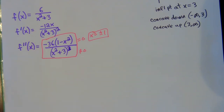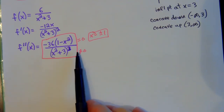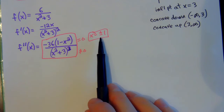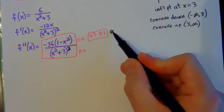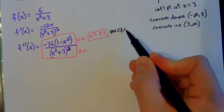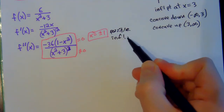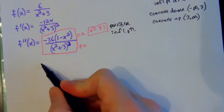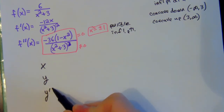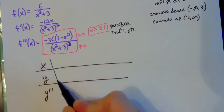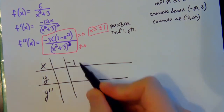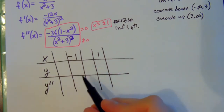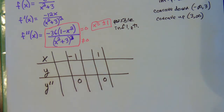Once you have the second derivative, set the numerator and denominator equal to zero. The denominator turns out to never equal zero, but the numerator gives x = ±1. These are the possible inflection points — it doesn't guarantee they are inflection points, but any inflection points must occur at these values. Now we make the x, y, y-double-prime chart, placing those two numbers with space to the left and right of each.